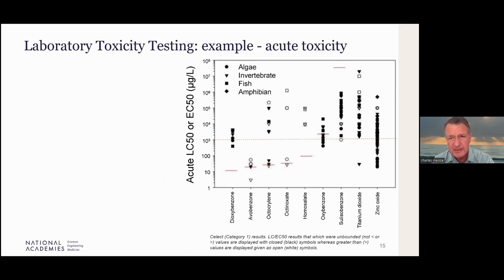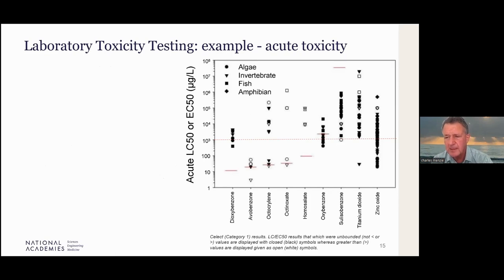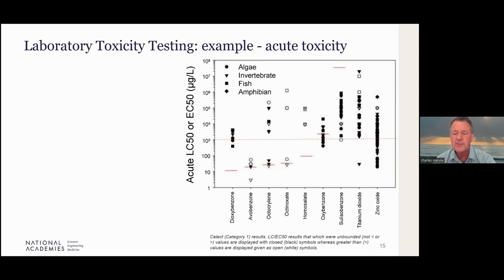I'd like to touch on laboratory toxicity testing information, using the data assembled on acute toxicity. The figure shows LC50 values on the y-axis in micrograms per liter, and on the x-axis are compounds that have been tested, including a number of organic compounds and the two inorganic compounds. There is a dashed line at 1,000 micrograms per liter — 10 to the third — that we use as a gauge to judge whether toxicity values tend to be higher or lower than that value. We use that value because it helps us orient to the measured concentrations in the environment, which for the most part range up to maybe 10 micrograms per liter, although individual values for some compounds can get higher.